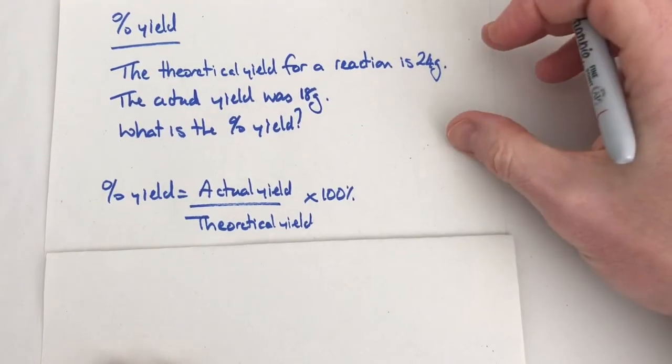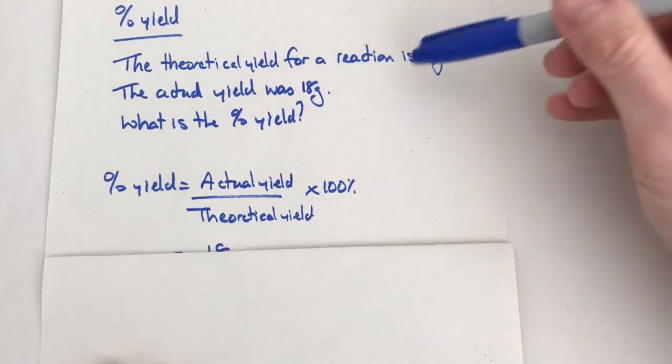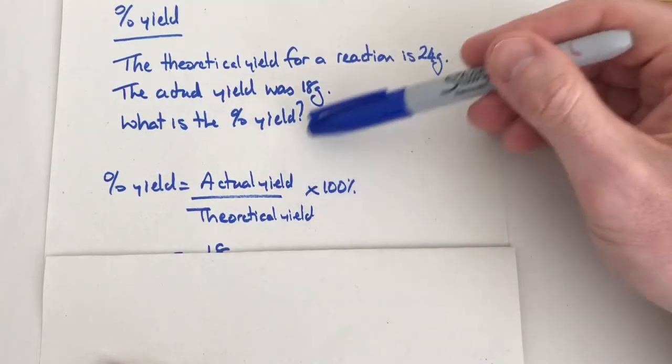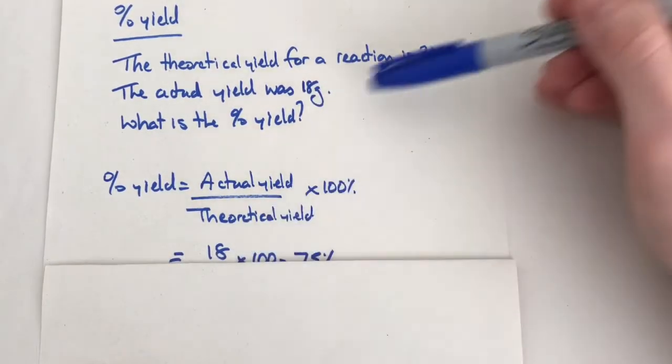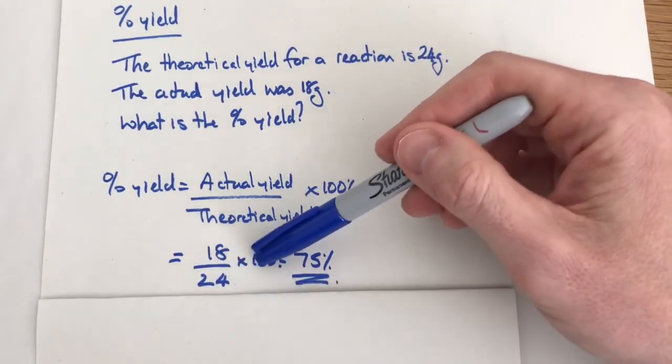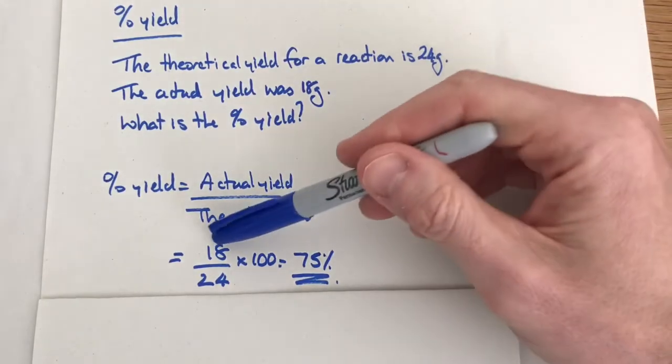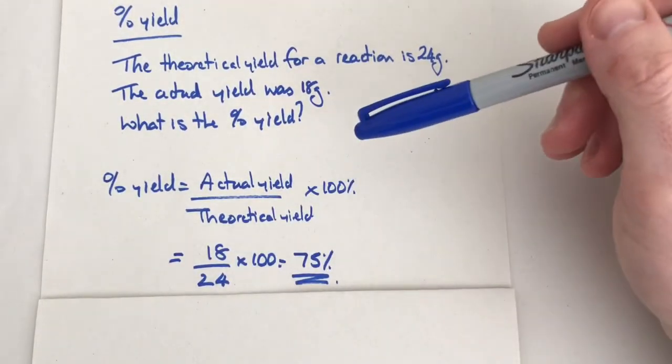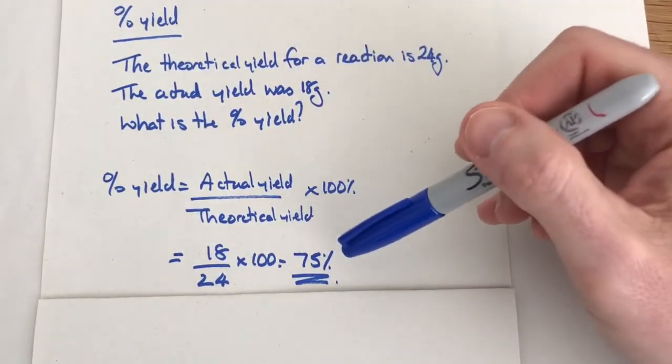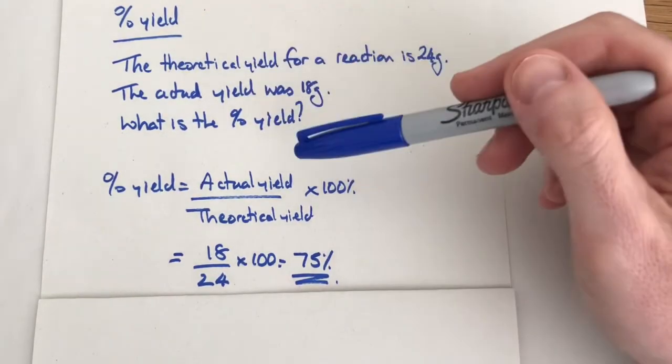If we do the substitution, the actual yield in our example was 18, the theoretical yield was 24. So we've got 18 divided by 24 times 100. 18 divided by 24 times 100 is 75 percent. So in this case the percentage yield was 75 percent.